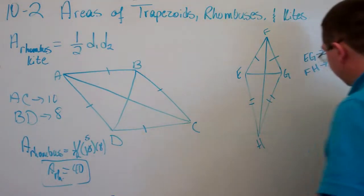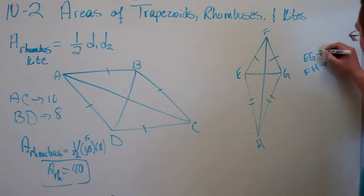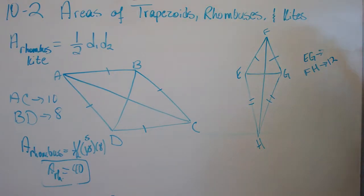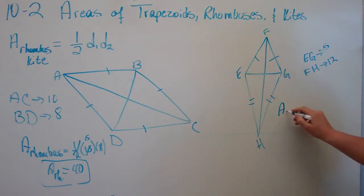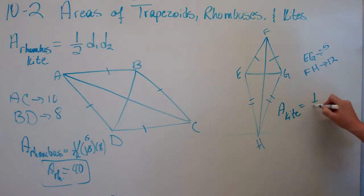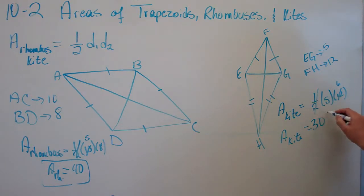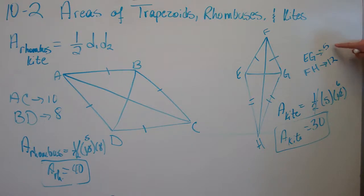Now let's look at our kite. Say FH equals 12 and EG equals 5. We use the same formula. The area of our kite is going to equal one-half of 5 times 12. Going ahead and halving 12 down to 6, 5 times 6 is simply 30. So the area of our kite with one diagonal of 5 and one diagonal of 12 is 30.